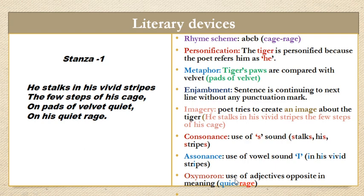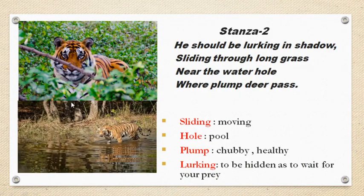Oxymoron: the use of adjectives opposite in meaning. 'Quiet rage' — rage is always violent, but here it is quiet. The rage is quiet because the tiger is in the cage. So this use of adjectives opposite in meaning is called an oxymoron.